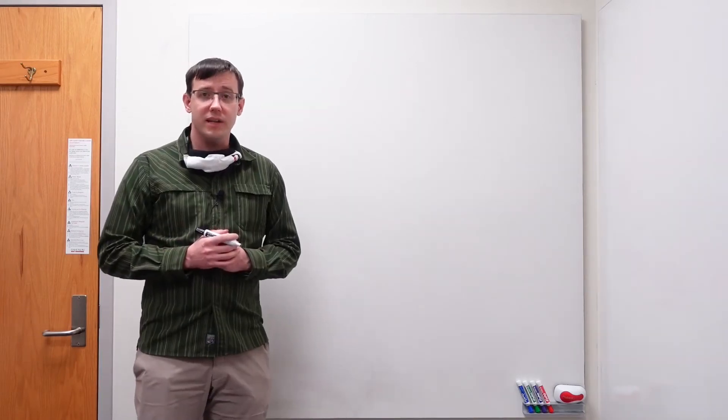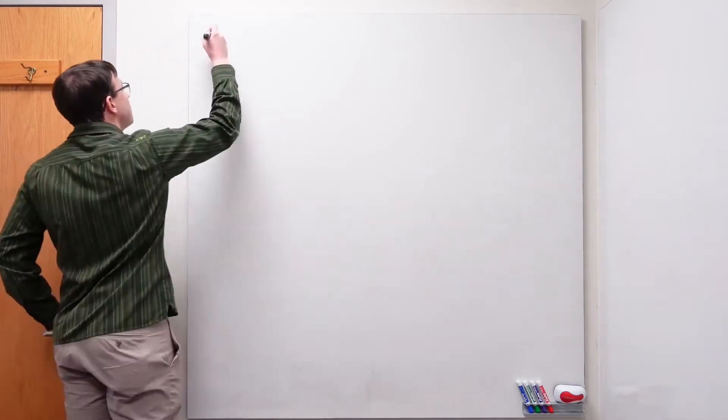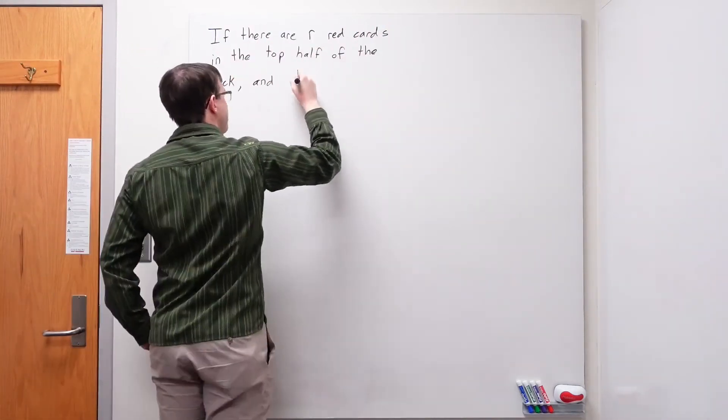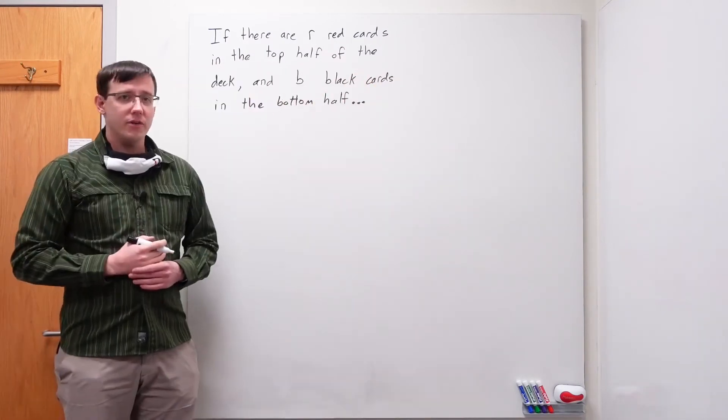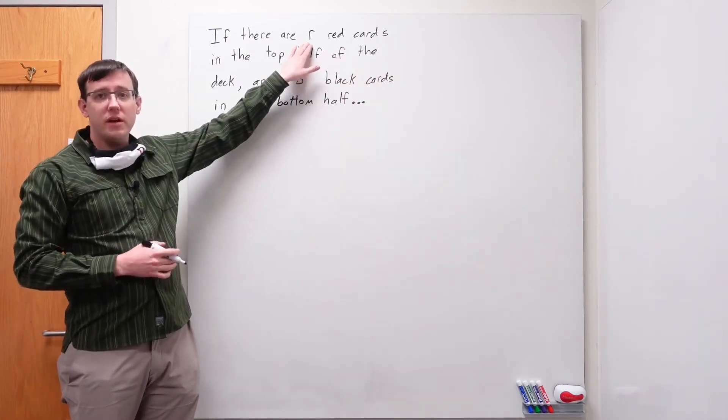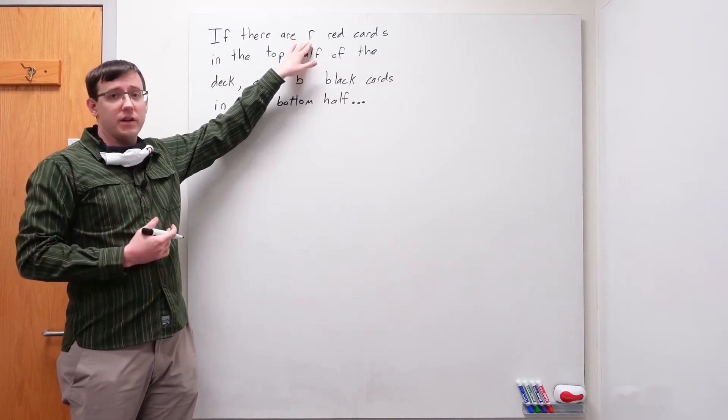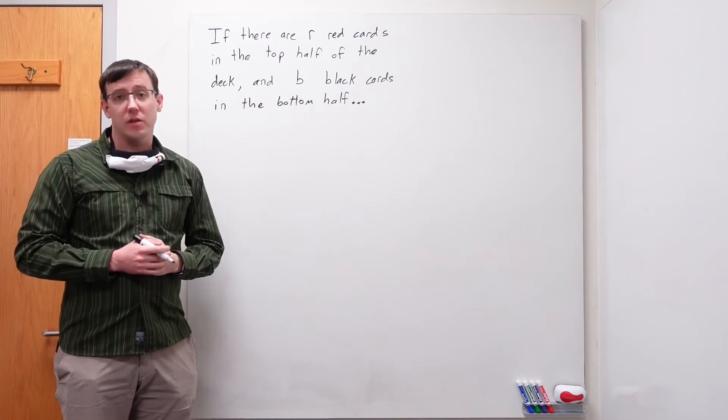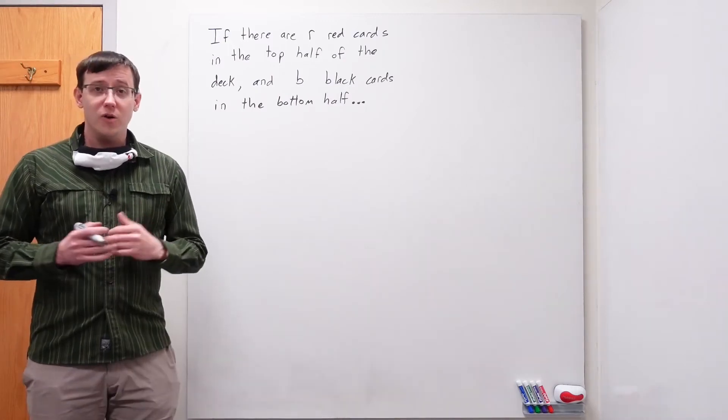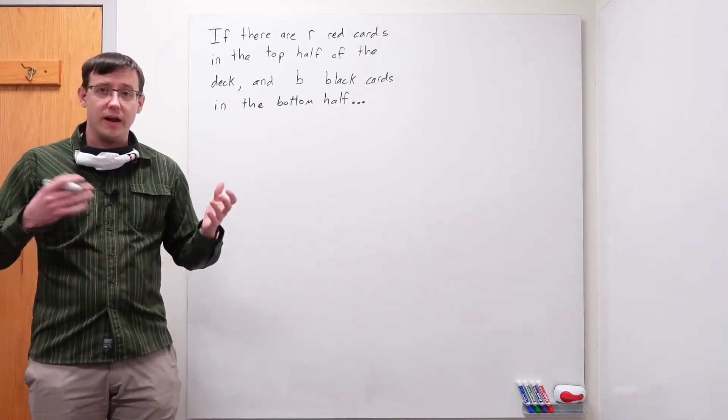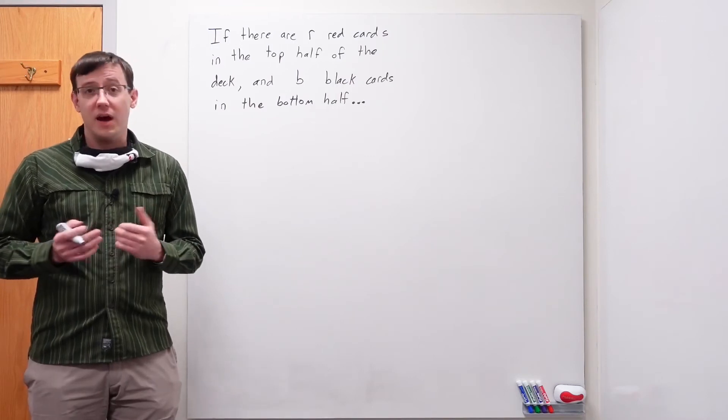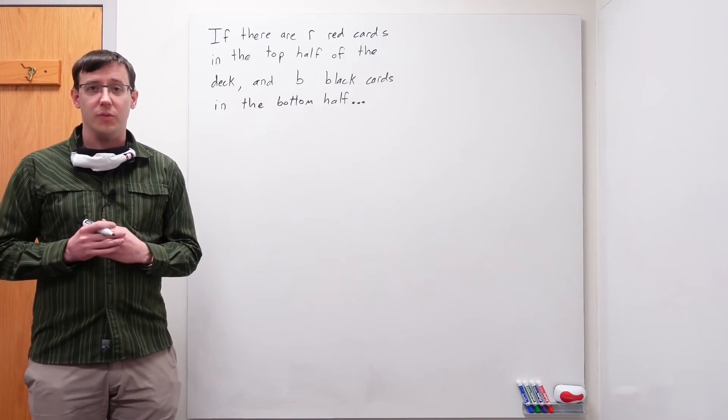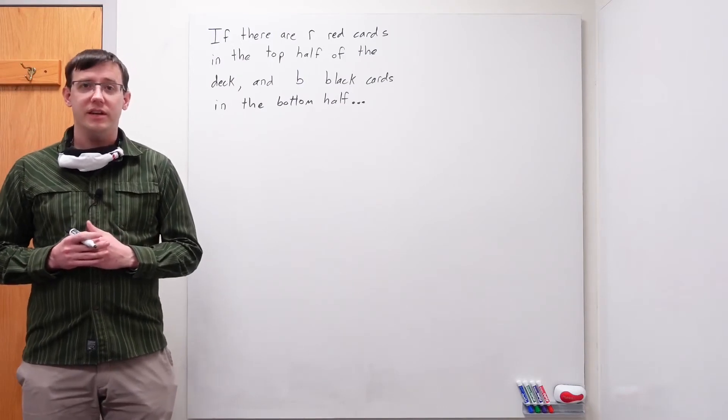To begin writing our proof, let's define some terms. Here I've defined r to be the number of red cards in the top half of the deck, and b to be the number of black cards in the bottom half. And our hope is that we can show that r and b are always equal. Let's be optimistic and write that conclusion at the end of our proof and see if we can fill in the details in between.